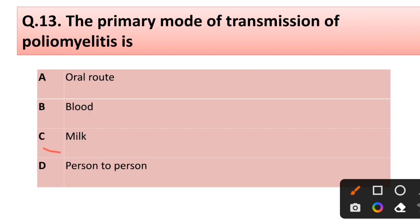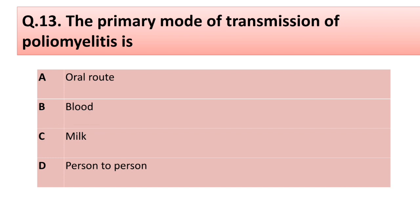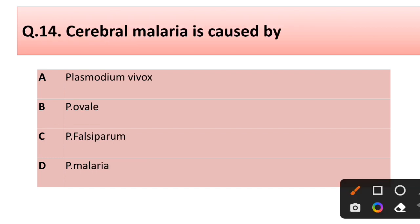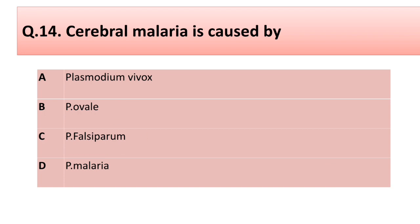Correct answer is option C: milk. Question number fourteen: tertian malaria is caused by — options: (a) Plasmodium vivax, (b) Plasmodium ovale, (c) Plasmodium falciparum, (d) Plasmodium malariae. Correct answer is option C: Plasmodium falciparum.